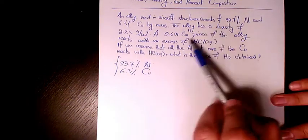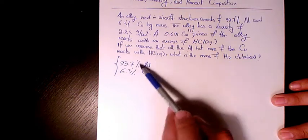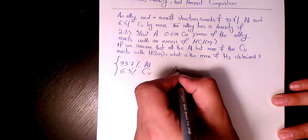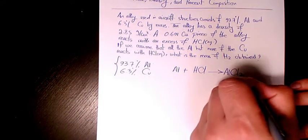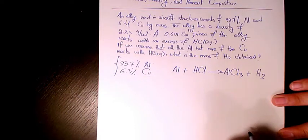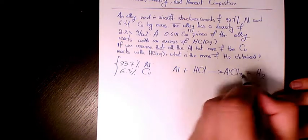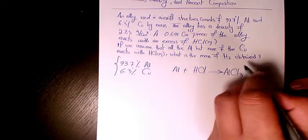So this alloy has aluminum and Cu, and it reacts with HCl, the acid hydrochloric acid, but only Al reacts. So it's going to be Al plus HCl that gives us AlCl3 plus H2. Then we need to balance it.